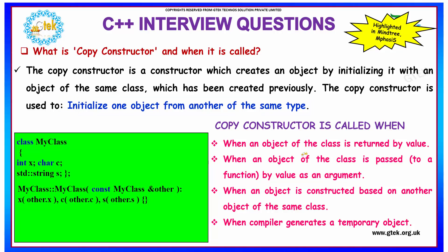A copy constructor is called in the following situations: when an object of the class is returned by value; when an object of a class is passed by value as an argument; when an object is constructed based on another object of the same class; and when the compiler generates a temporary object. In these cases, the copy constructor will be invoked.